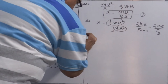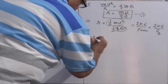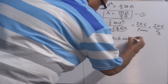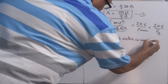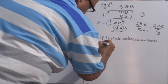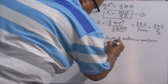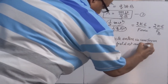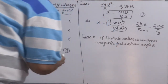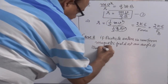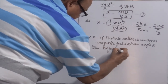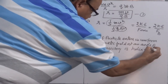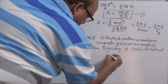What happens if the particle doesn't enter at right angle? If a particle enters a uniform magnetic field at an angle theta, then the trajectory is helical — a helix.